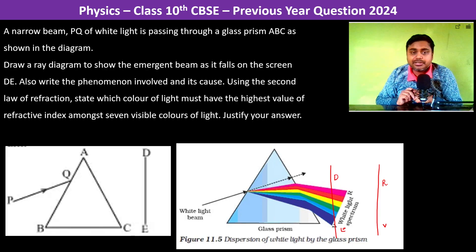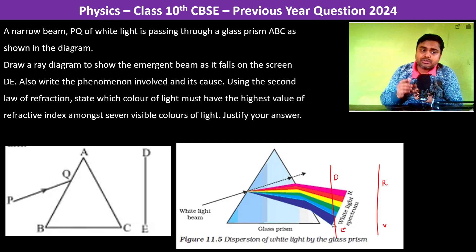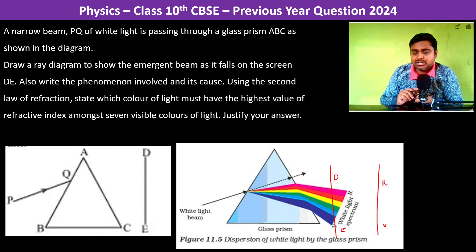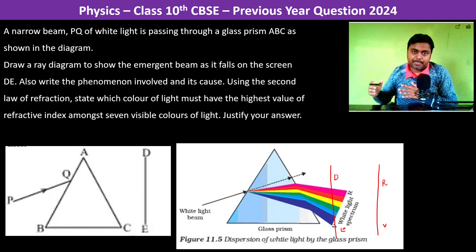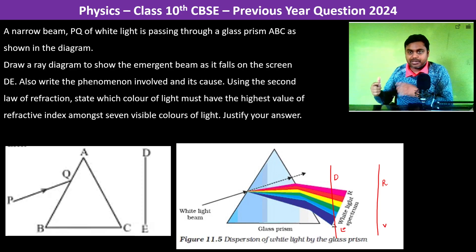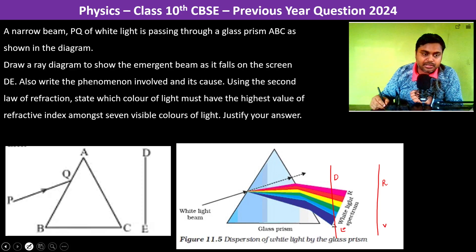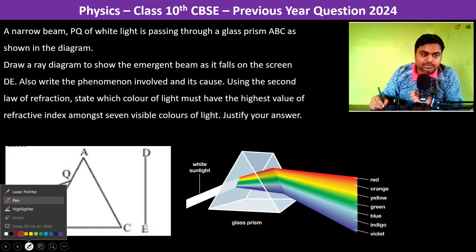Now write the phenomenon involved and its cause. So the phenomenon involved here is going to be dispersion, and dispersion is caused due to refraction. The process involved is refraction and this refraction causes the splitting of light. Now how does this refraction cause the splitting of light? This also we will understand.